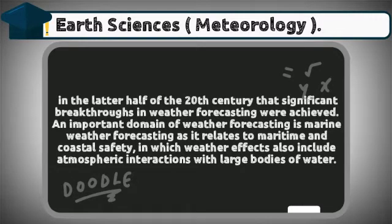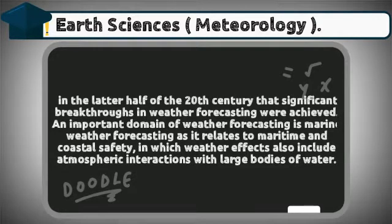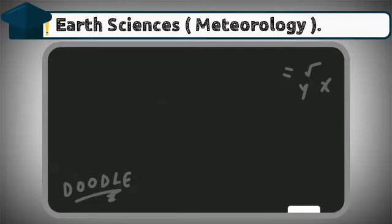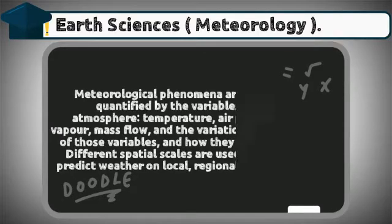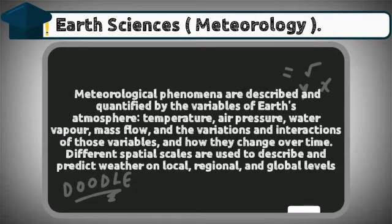in the latter half of the 20th century, that significant breakthroughs in weather forecasting were achieved. An important domain of weather forecasting is marine weather forecasting, as it relates to maritime and coastal safety, in which weather effects also include atmospheric interactions with large bodies of water.